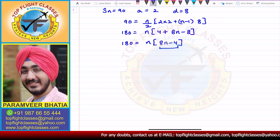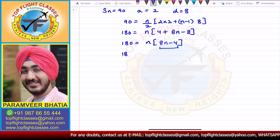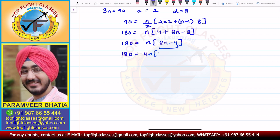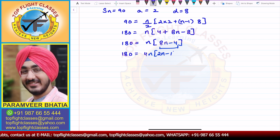Taking 4 common out, what I get is 180 = 4N times (2N minus 1).